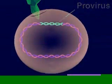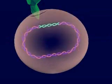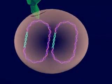During cell reproduction, the host cell copies the provirus genes along with its own DNA. The provirus is inactive at this time.